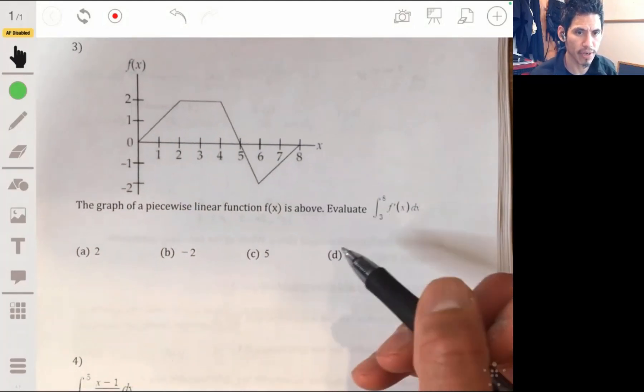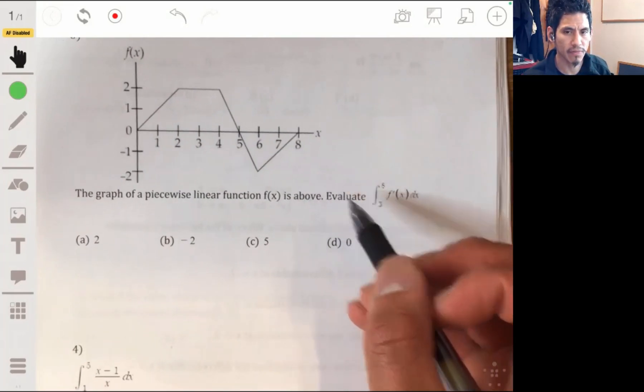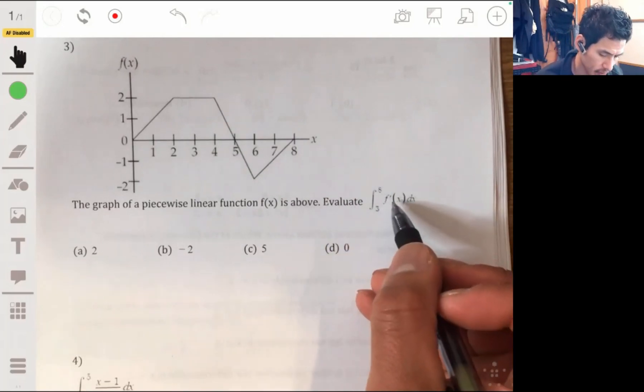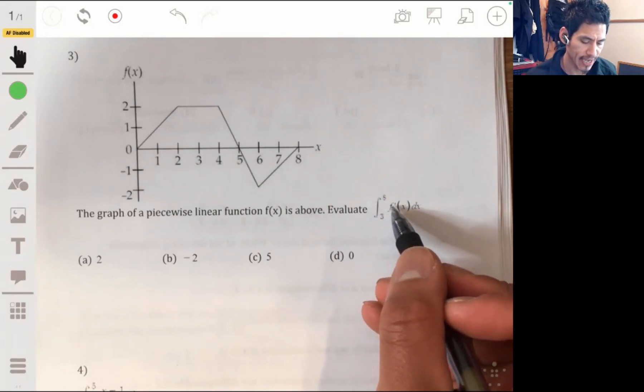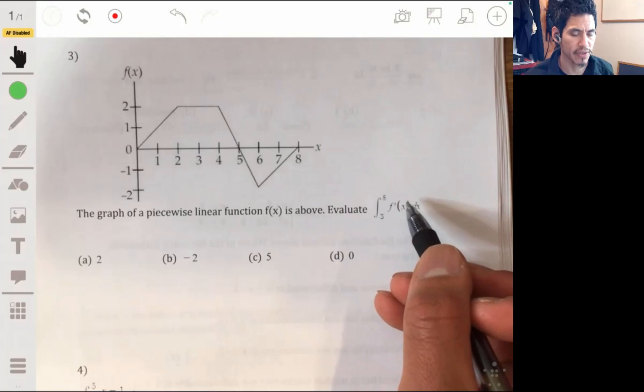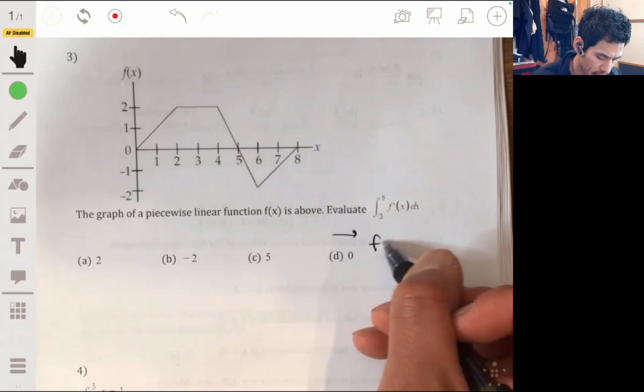Problem three, the graph of a piecewise linear function is given above. Evaluate the integral from 3 to 8 of f prime of x dx. Okay, so if you remember what integral is, you want to find the antiderivative of whatever's in here. Well, since we're given the derivative, the antiderivative of the derivative is just the original function.